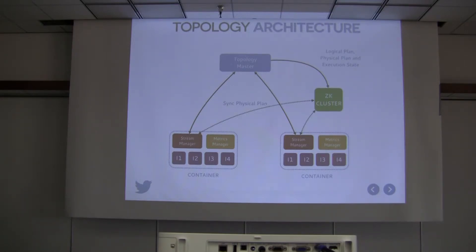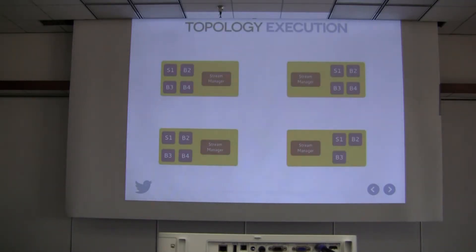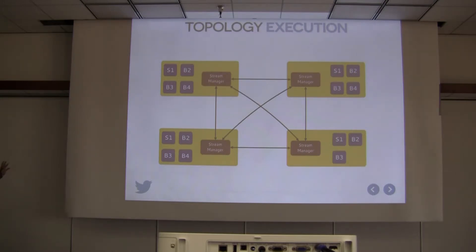The physical plan describes how containers communicate with each other — for example, which host and port each stream manager is on. This plan is pushed to all stream managers so they can discover each other. Once they discover each other, they connect and become a fully connected graph, and data flow begins. If you have four containers, every stream manager discovers the others via the physical plan and starts exchanging data.